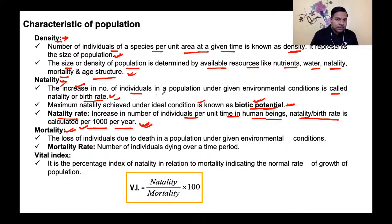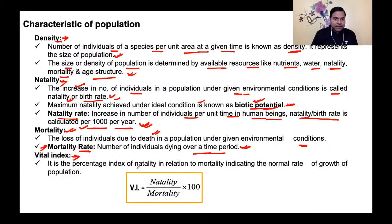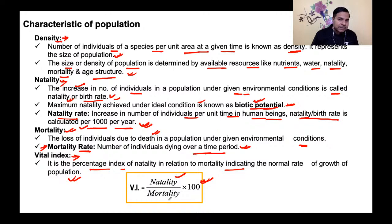Mortality is the loss of individuals due to death in a population under given environmental conditions. Mortality rate is the number of individuals dying over a time period. Next is vital index — it is the percentage index of natality in relation to mortality, indicating the normal rate of growth of a population. Mathematically: vital index = (natality / mortality) × 100.